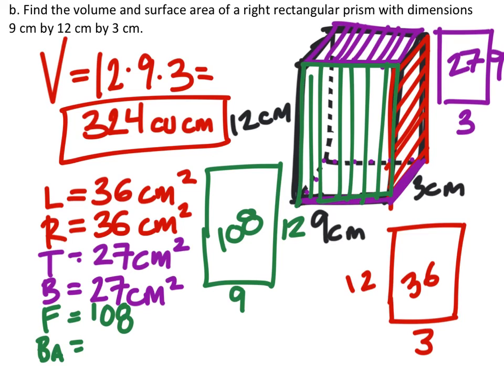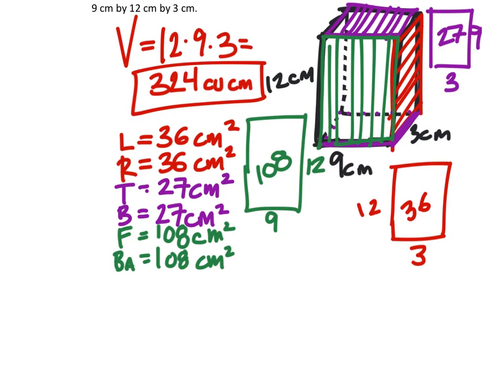So we'll write that in. The front face is 108 centimeters squared, same with the back. And to find the total surface area, we just need to add these together, which we could kind of do in a calculator, but let's go ahead and add these together.